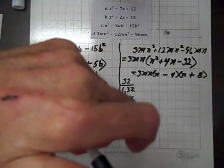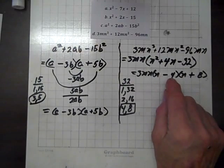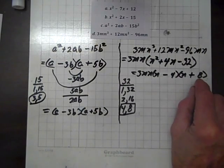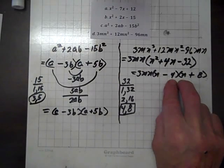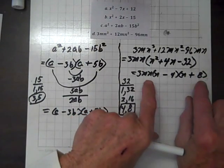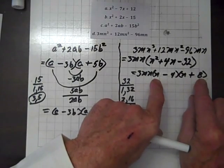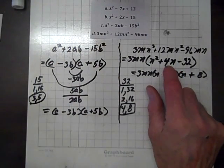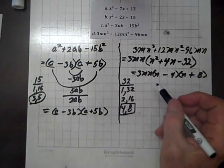Now, let's try it out. n times n is n². Negative 4 times 8 is negative 32. Negative 4n, this product, plus 8n gives back 4n. So, we're done.